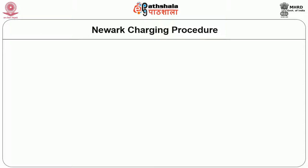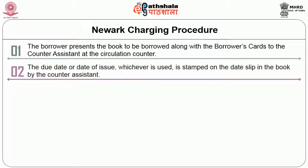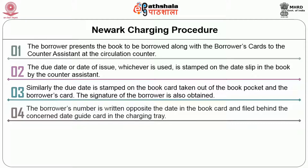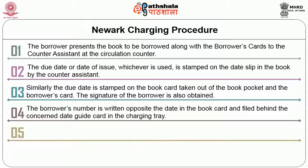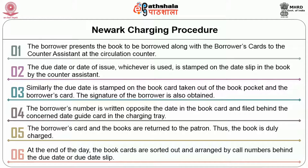The New York charging procedure involves the following steps: the borrower presents the book along with the borrower's card to the counter assistant; the counter assistant removes the book card from the book pocket and stamps the due date on the date slip in the book; similarly, the due date is stamped on the book card and borrower's card, and the borrower's signature is obtained; the borrower's number is written on the book card and filed behind the concerned date guide card in the charging tray; the borrower's card and book are returned to the user, and the book is thus duly charged. At the end of the day, the book cards are sorted and arranged by call number behind the due date guide.